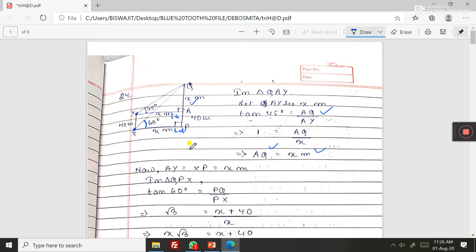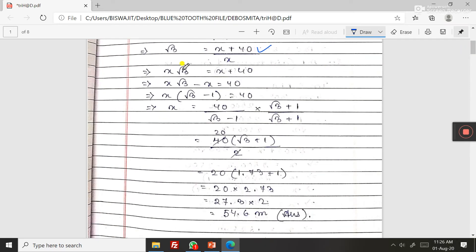Now in triangle QPX, 60 degrees, so tan 60, perpendicular QP, that is x plus 40 degrees by base is x. So if you put the value, then you are getting x is equal to this.